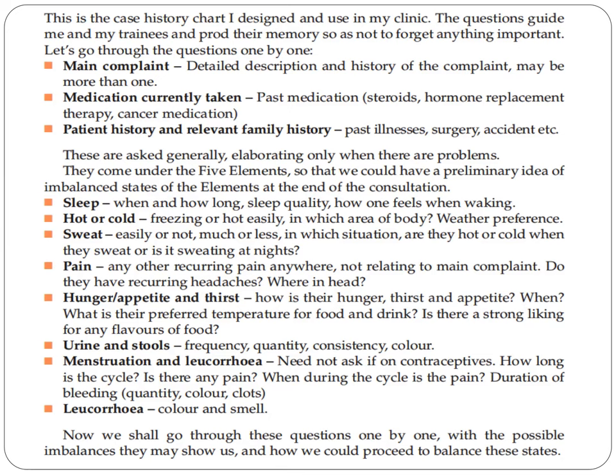Do they have recurring headaches? For hunger, thirst, and appetite, we note how they are and any particular time or preference — temperature for food and drinks, and if there is a strong liking for any flavor or food. For urine and stool, we ask about frequency, quantity, consistency, and color. For menstruation and leukorrhea — not needed if on contraceptives — we ask about cycle length, pain, when during the cycle the pain occurs, duration of bleeding, quantity, color, and presence of clots. For leukorrhea, we note color and smell. We shall then go through these questions one by one with the possible imbalances they may show us and how we could proceed to balance these states.